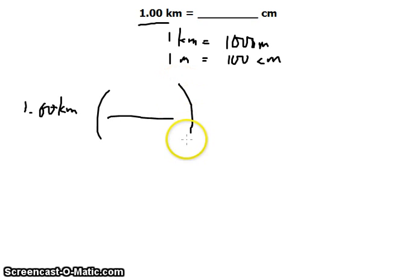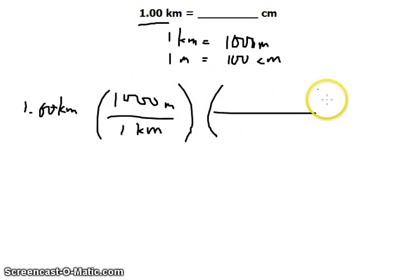We do the same thing with the next conversion factor. 1 meter is 100 centimeters. Now we can cancel the units in meter and the units in kilometer, which leaves us with units in centimeter only.